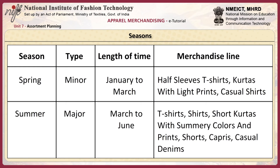For summer (a major season from March to June), the merchandise line includes t-shirts, shirts, short kurthas with summery colors and prints, shorts, capris, and casual denims. For pre-autumn (a minor season from July to September), the merchandise line includes t-shirts, shorts, denims, and trousers.